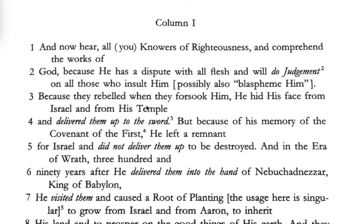Starting with Column One, it says: 'Now hear me, you knowers of righteousness, and comprehend the works of Elohim, because he has a dispute with all flesh and will do judgment on all those who blaspheme him. Because they rebelled when they forsook him, he hid his face from Israel and from his temple and delivered them up to the sword. But because of his memory of the covenant of the first, he left a remnant for Israel and did not deliver them up to be destroyed.'